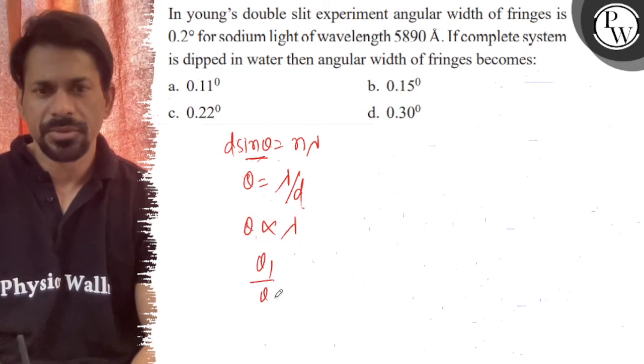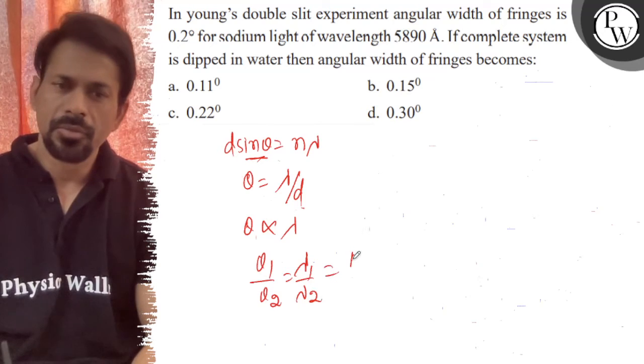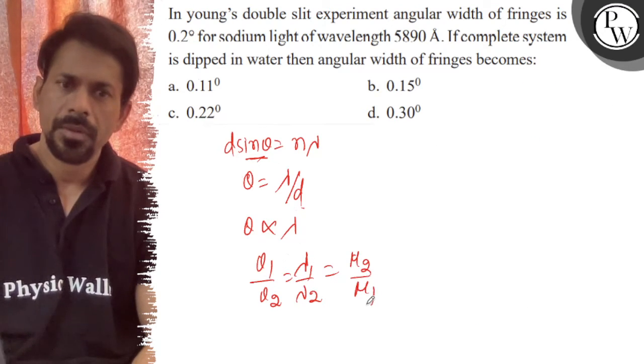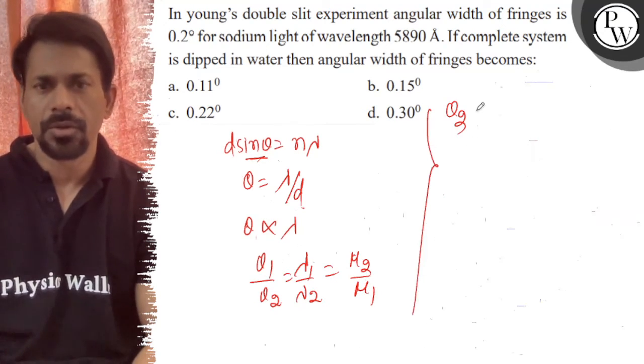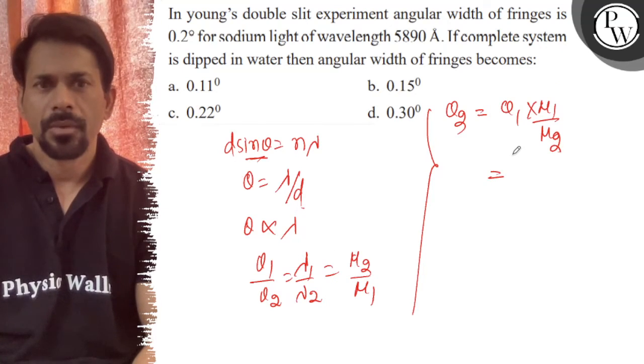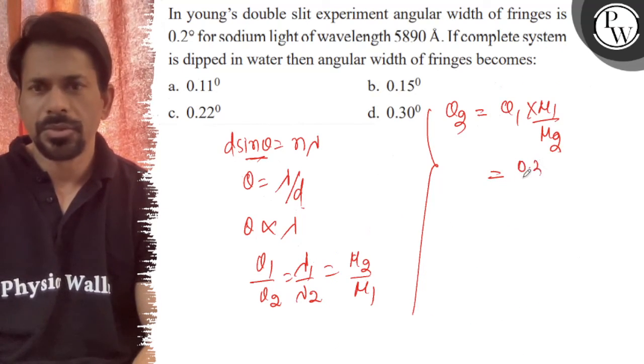And theta 1 upon theta 2 is nothing but lambda 1 upon lambda 2, or that is equal to mu 2 upon mu 1. So theta 2 is equal to theta 1 into mu 1 upon mu 2. And mu 1 is your air and mu 2 is your water, so 0.2 into 4 by 3.